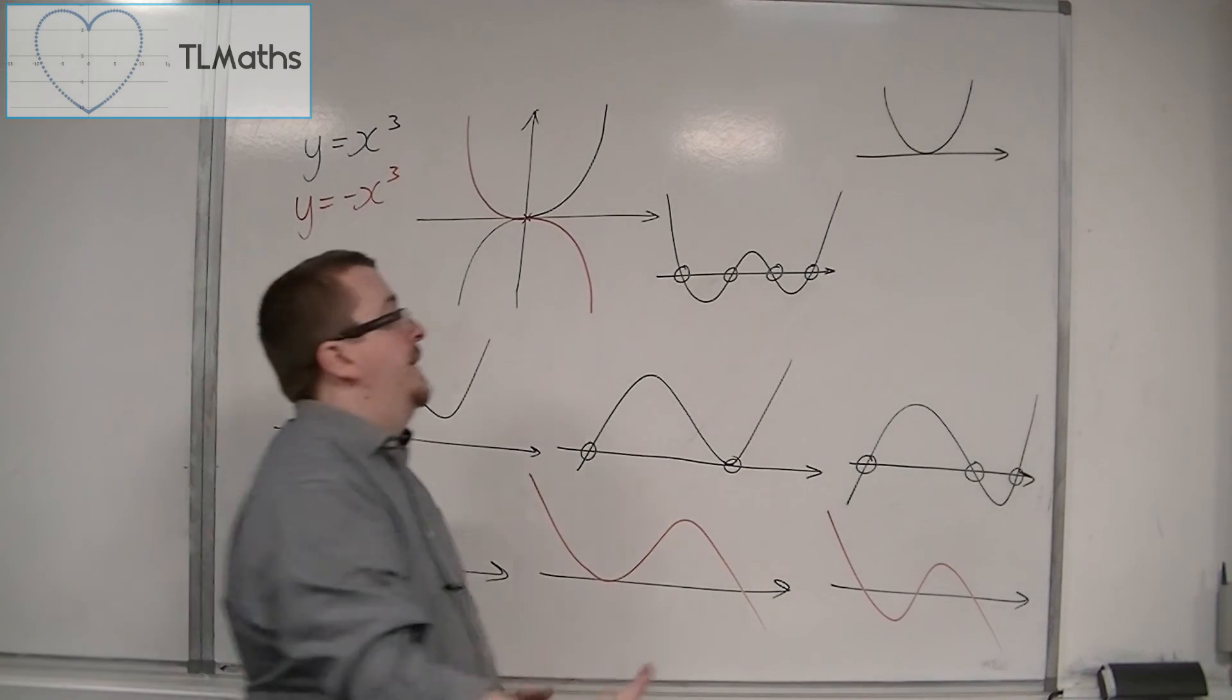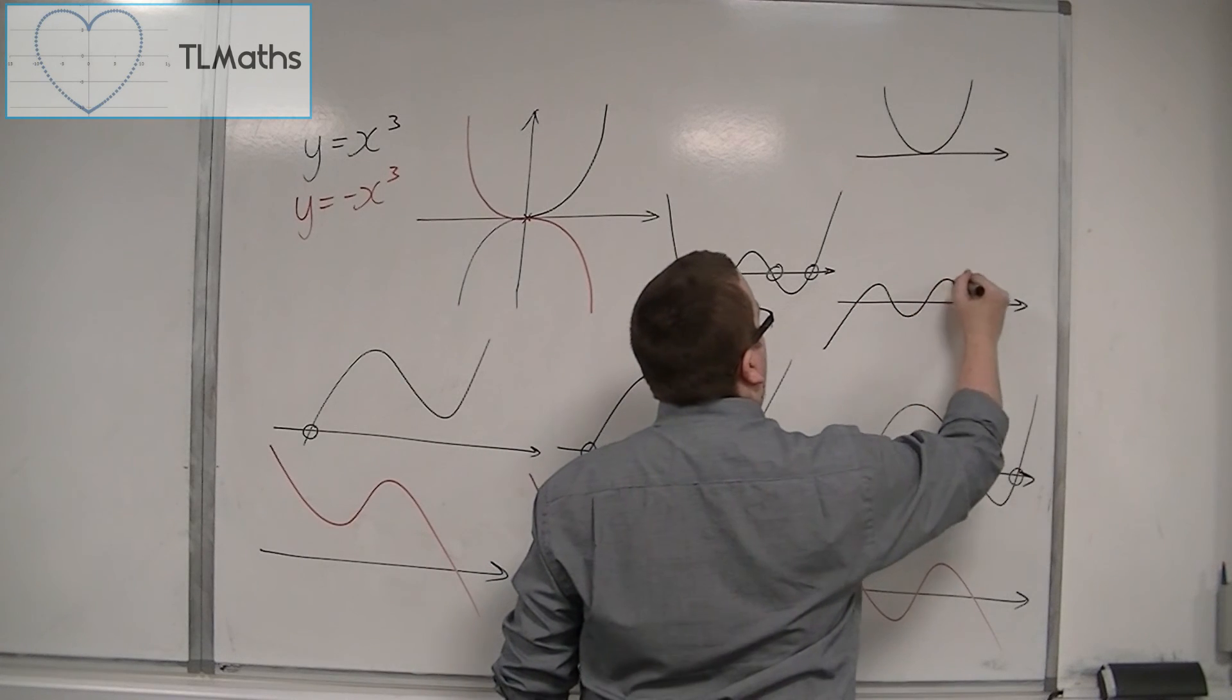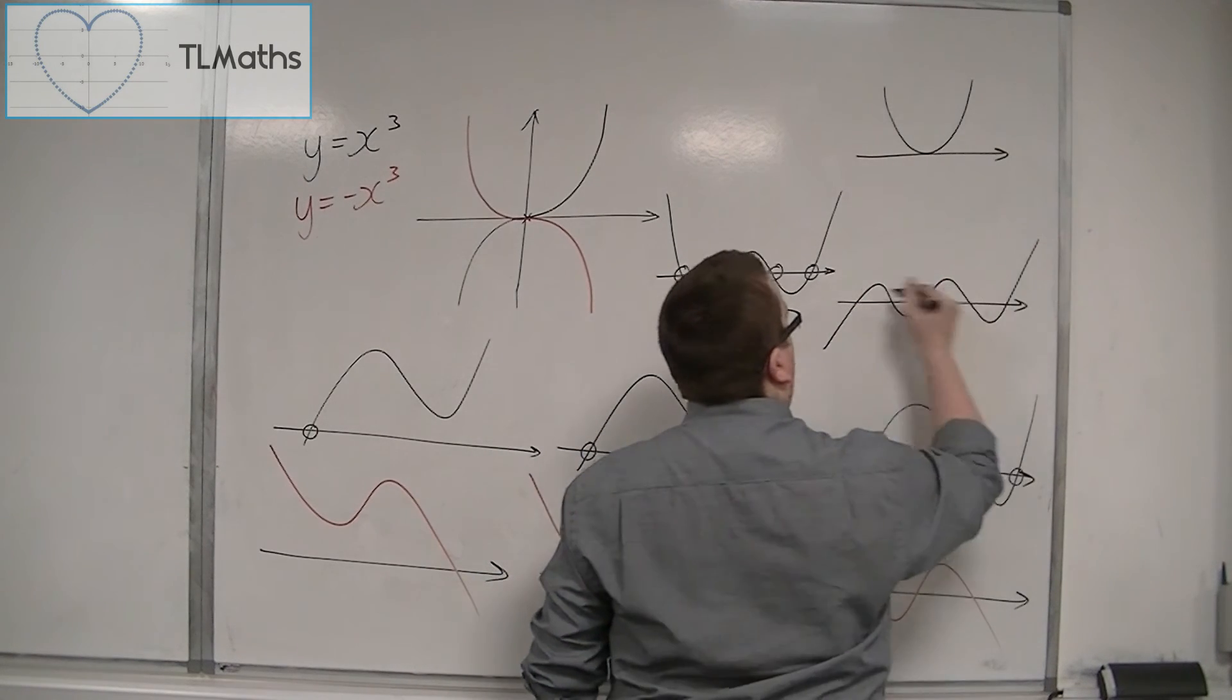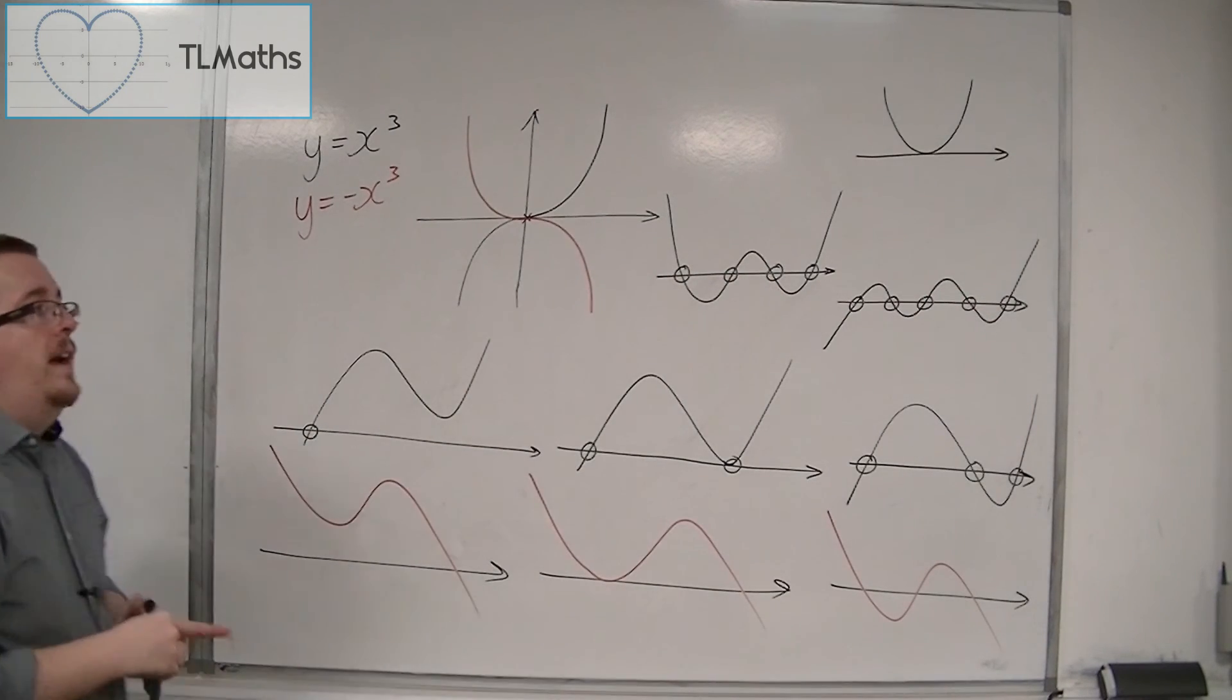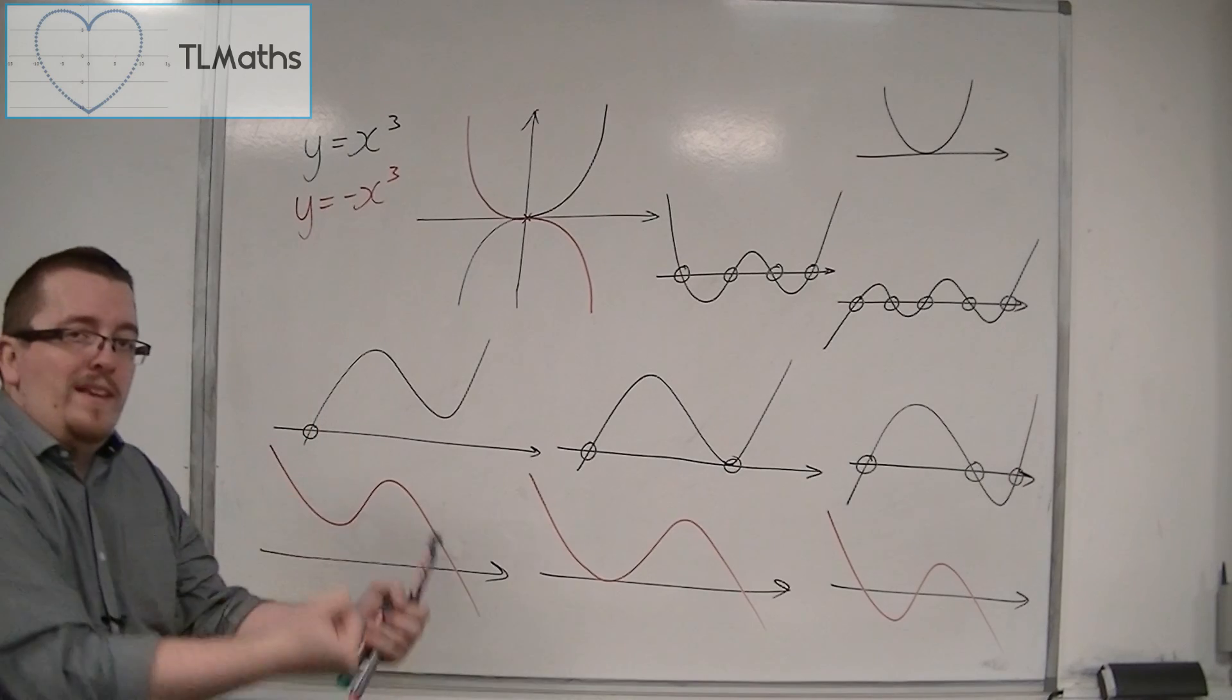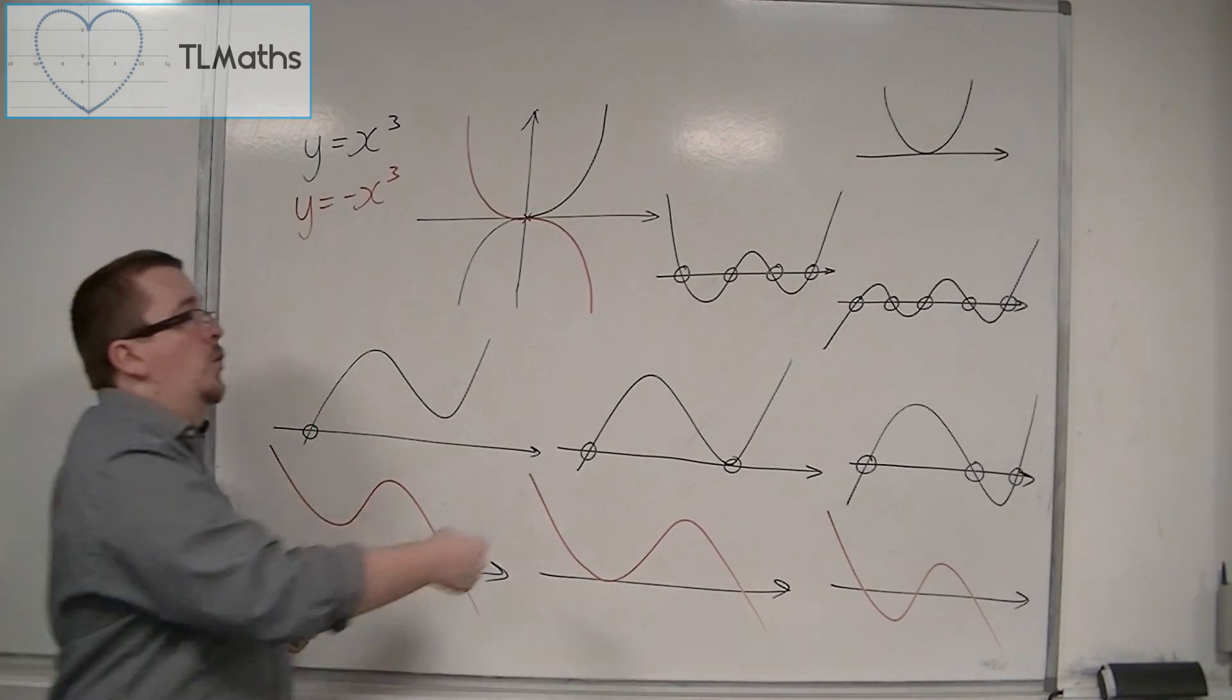And a quintic would have five. So one, two, three, four, five.